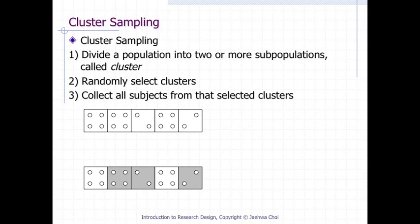If we collect data using: one, divide a population into two or more subpopulations called clusters; two, randomly select clusters; three, collect all subjects from that selected cluster; this sampling method becomes cluster sampling. For example, we can randomly select some schools, and then we can observe all students from the selected schools.